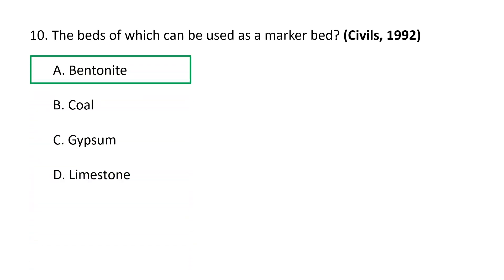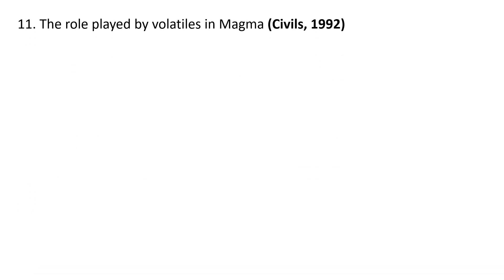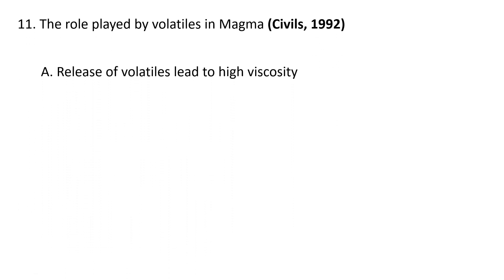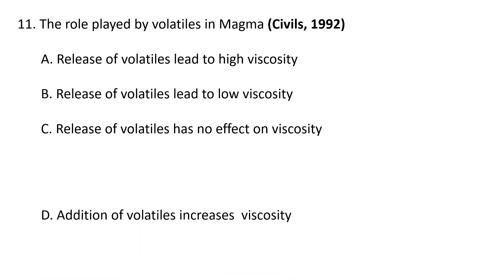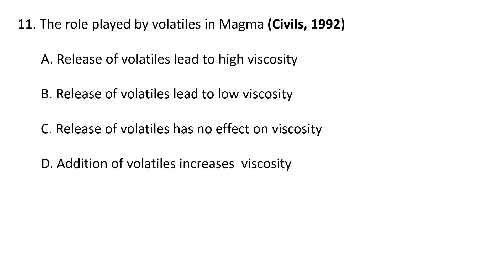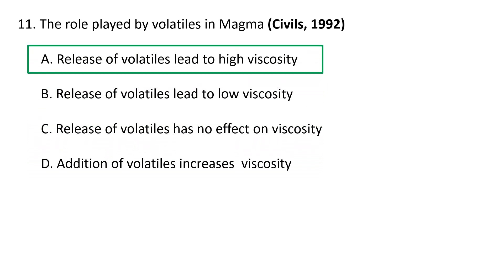Next question: The role played by volatiles in magma — A. Release of volatiles leads to high viscosity, B. Release of volatiles leads to low viscosity, C. Release of volatiles has no effect on viscosity, D. Addition of volatiles increases viscosity. The role played by volatiles in magma is that when volatiles are released, it leads to high viscosity.